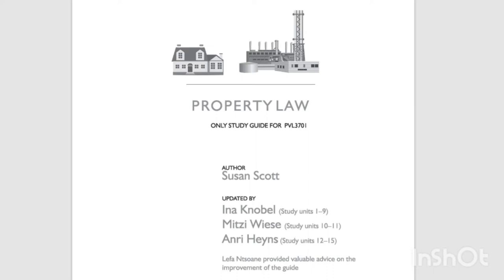In certain cases, real relationships may take on distinctive characteristics, with the result that the rights and duties ensuing from these relationships may vary. We therefore distinguish between different kinds of real relationships on the basis of the ensuing rights and duties. In principle, a legal subject may acquire rights from a real relationship only if it is lawful — that is, if it complies with the legal rules. A legal subject will not acquire any rights from unlawful real relationships, although the relationship as such may still have consequences for the law of things.